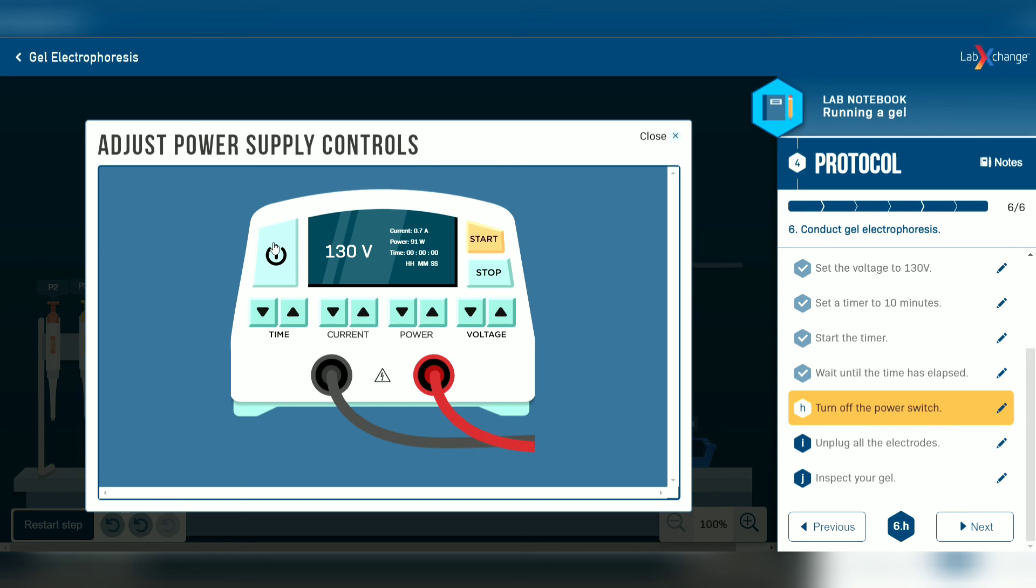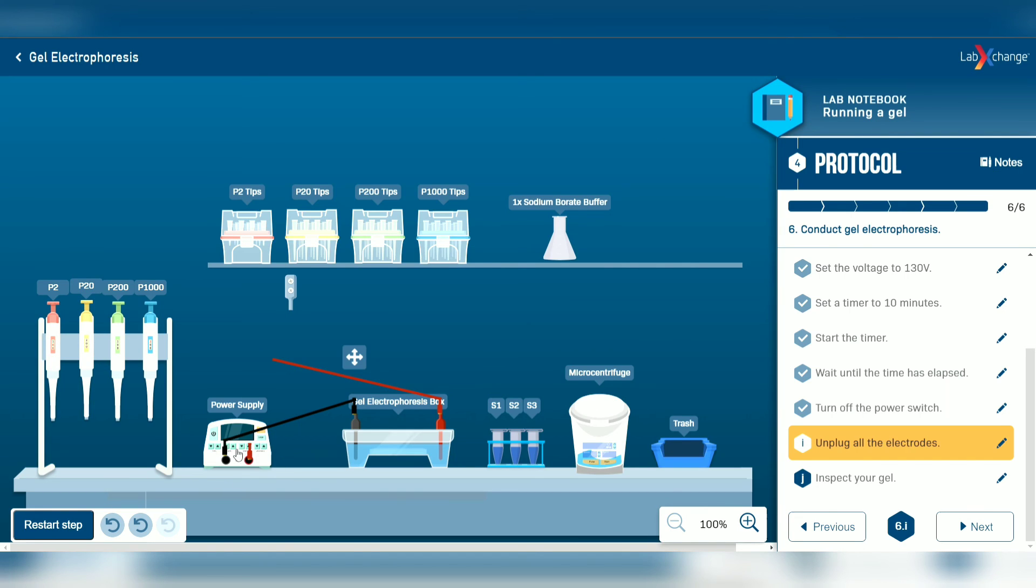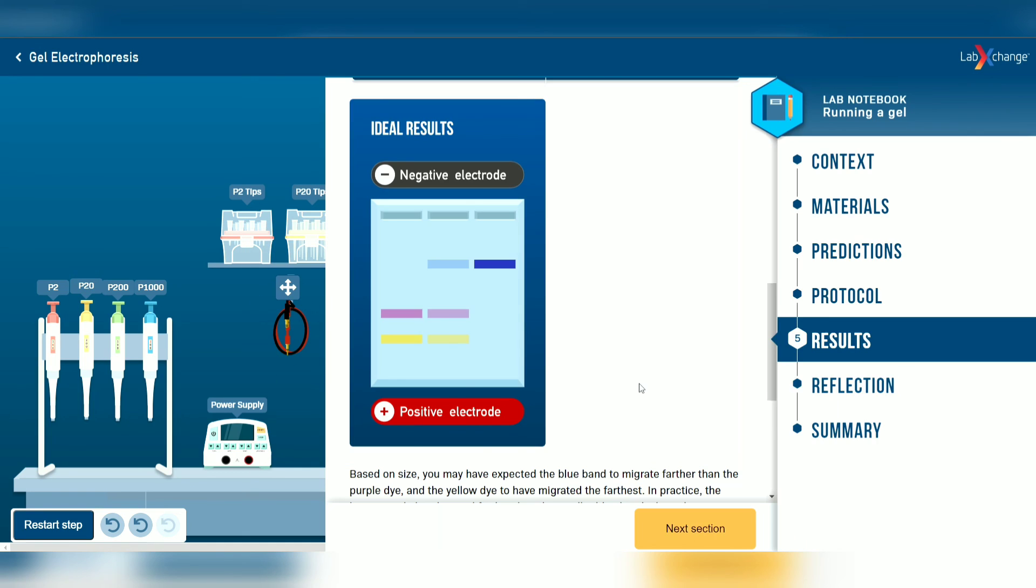Now turn off the power supply and unplug the electrodes. Now let's inspect the gel. So this is our result. It's the same as the ideal result. So that means we have successfully done this experiment.